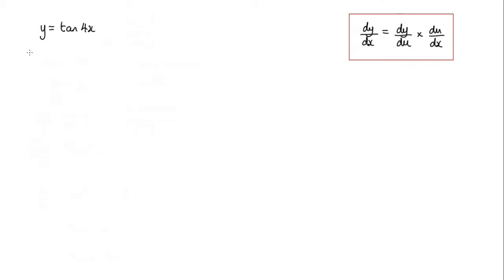So in this particular case, I want to let u equal 4x. And when I differentiate that, I get du by dx is equal to 4.